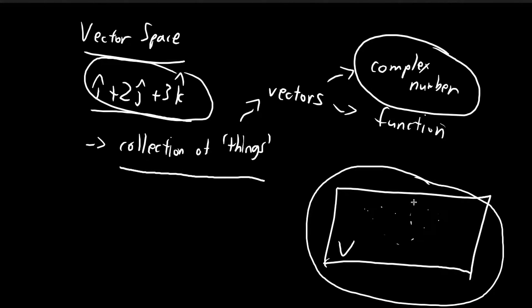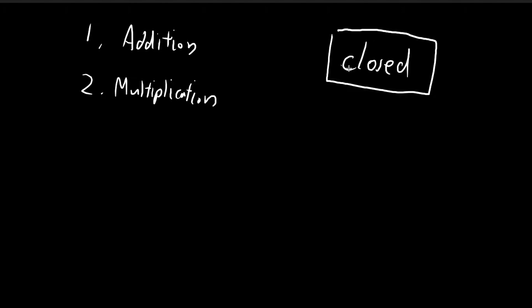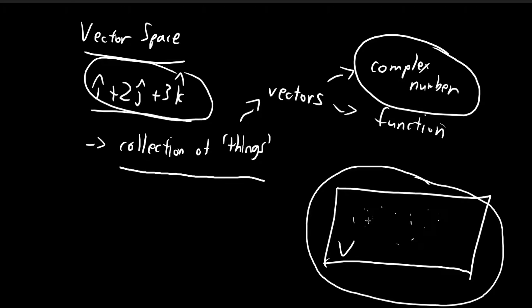The first condition that needs to be met is that addition and multiplication need to be defined, and they need to be defined in such a way that these two operations are closed. Let's talk about addition first — when I say addition, I'm referring to vector addition, the process by which you add two vectors together. If you have a collection of mathematical objects, you need to define rules by which you can add elements within this set together. In the case of complex numbers, we do have a definition for vector addition.